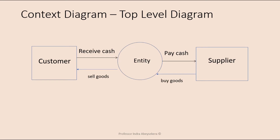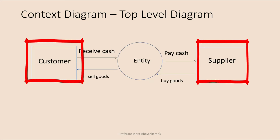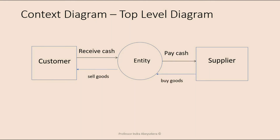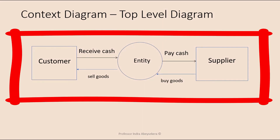There are different levels of detail in data flow diagrams. The top level, or most condensed level of detail, is called the context diagram. In the context diagram, there are external entities and the entity in focus is the information system, which is shown as a circle like a process. What is shown is the interaction or the data flow between the information system in focus and the external entities.